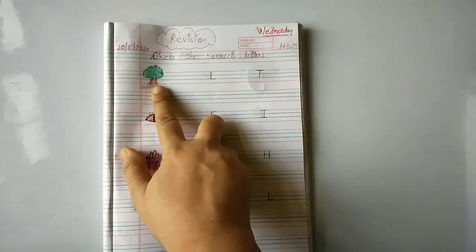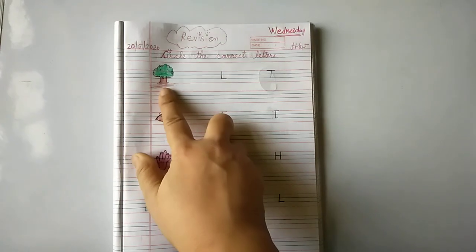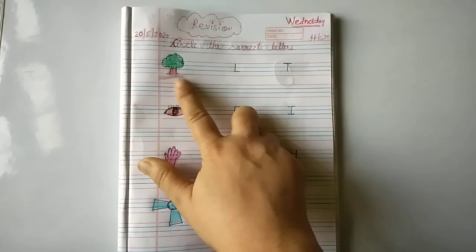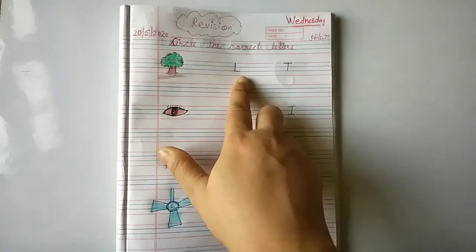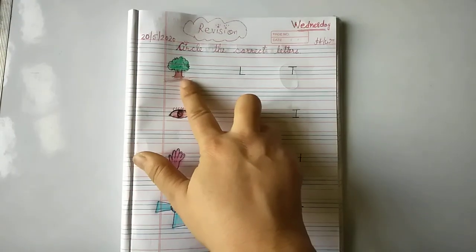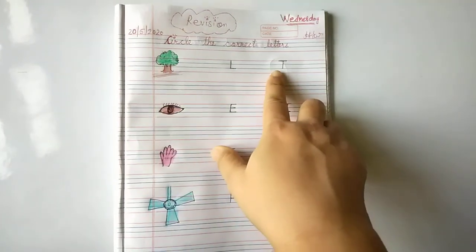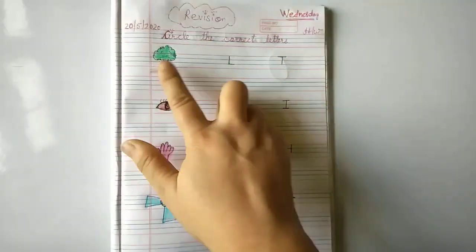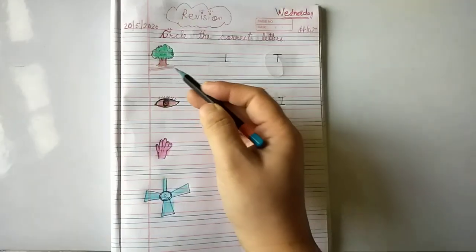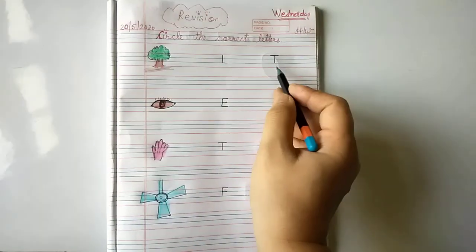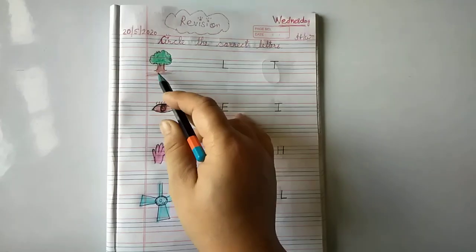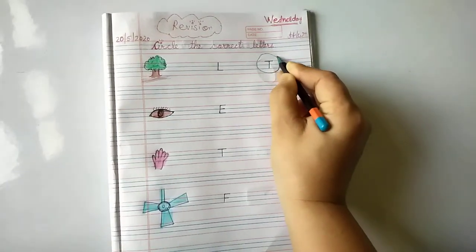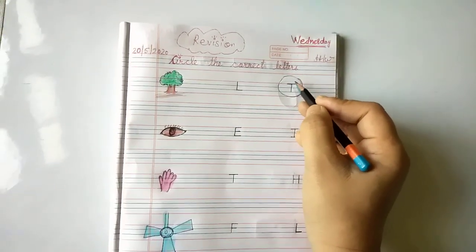First look at which picture is this? Tree. What is this? This is a tree. Now tell me, does L make tree or T make tree? L or T? No. T for tree, T for tree. L does not make tree, so which letter makes tree? T, T for tree. So you have to circle T like this. Okay? Did you understand?